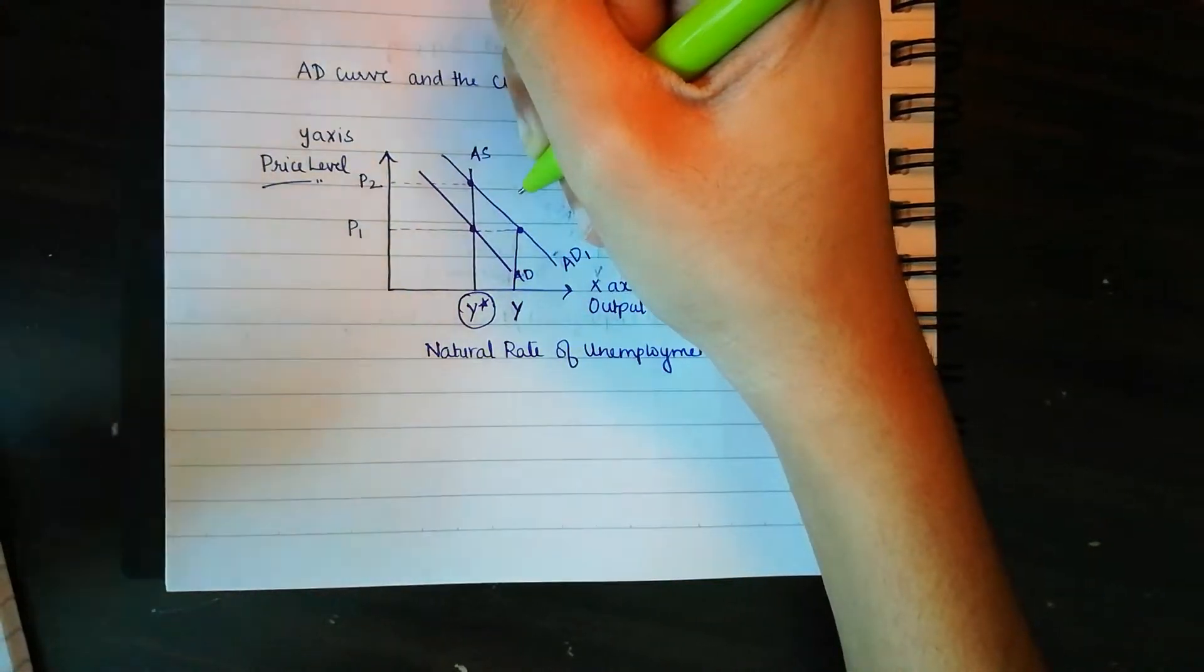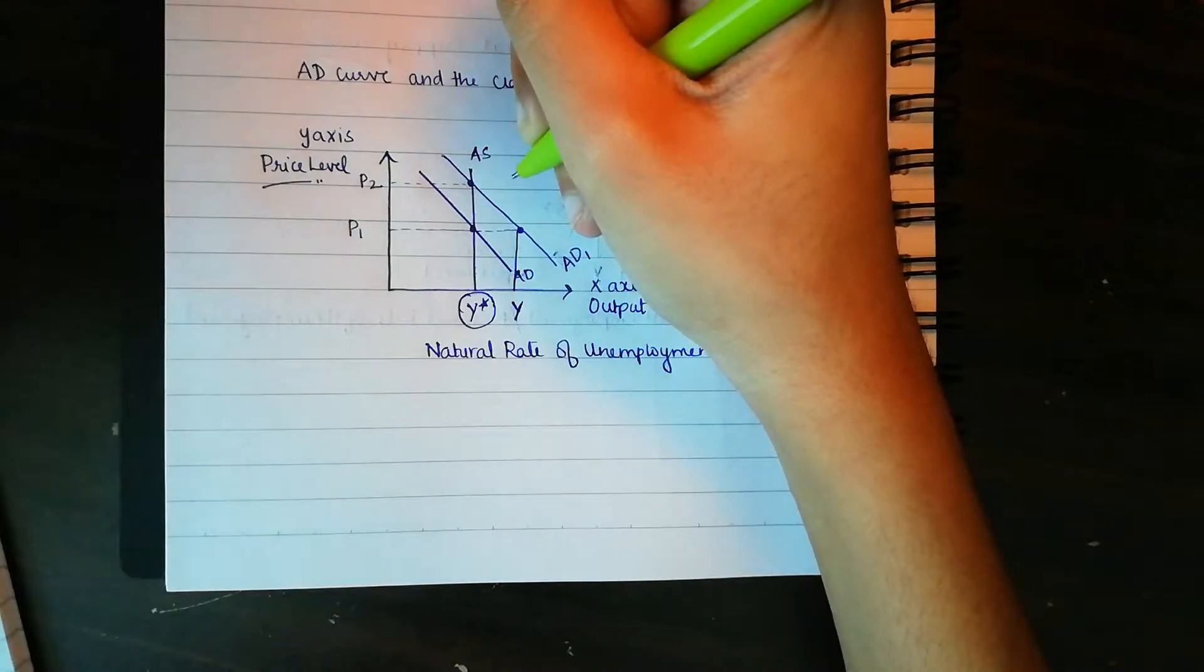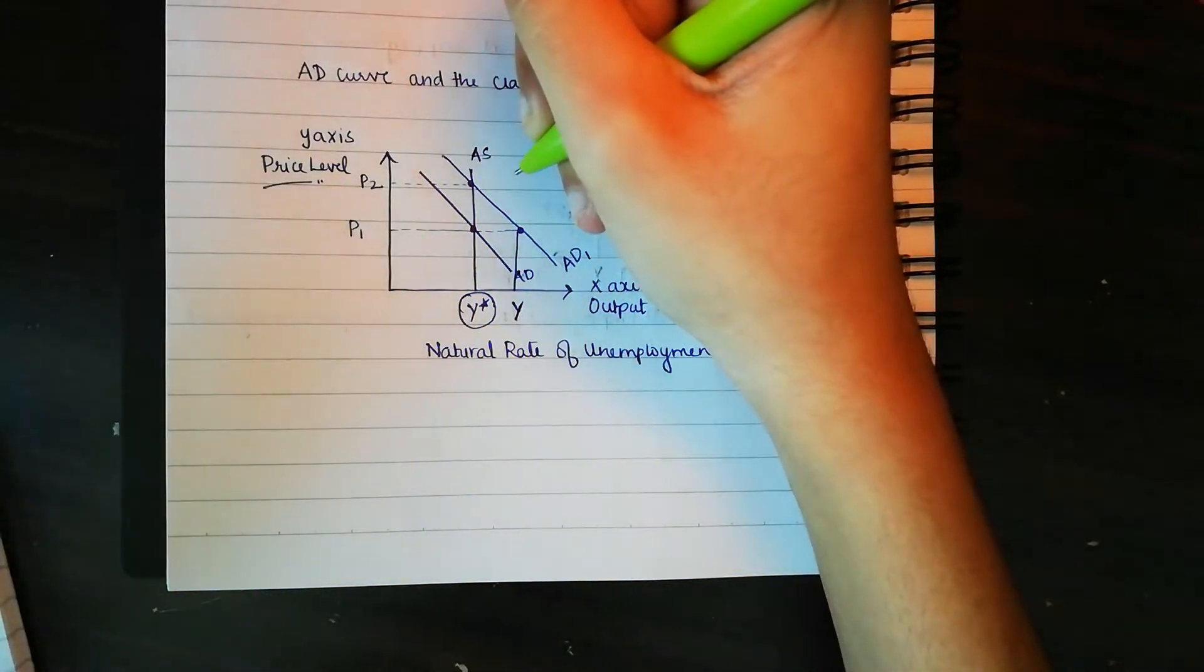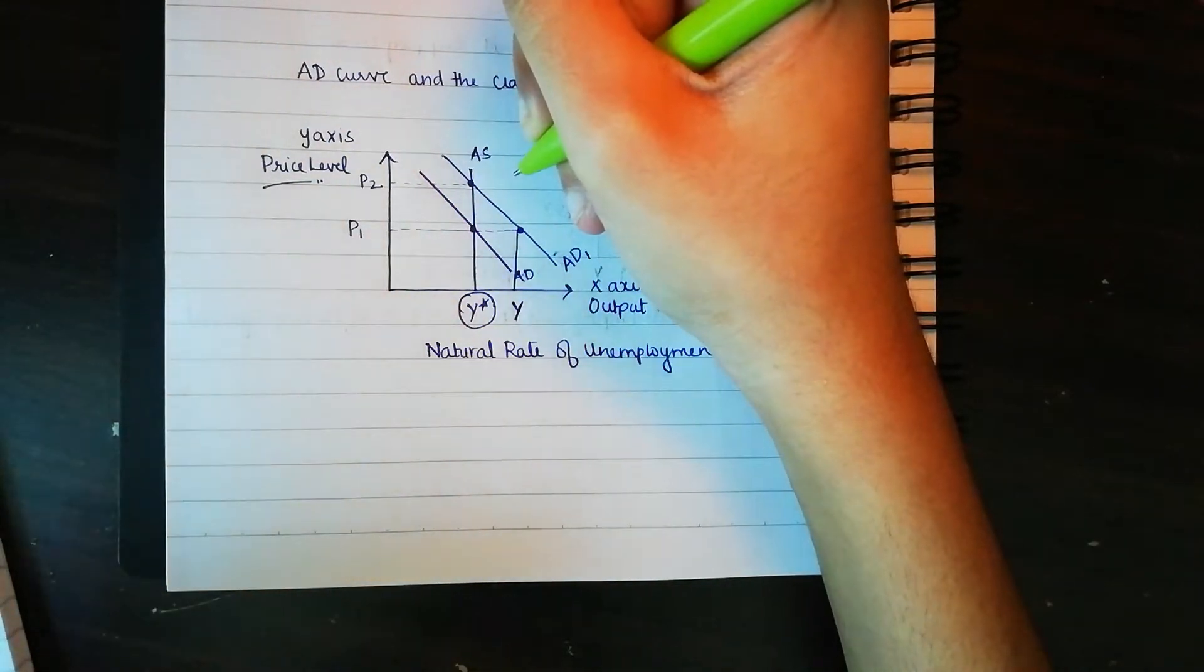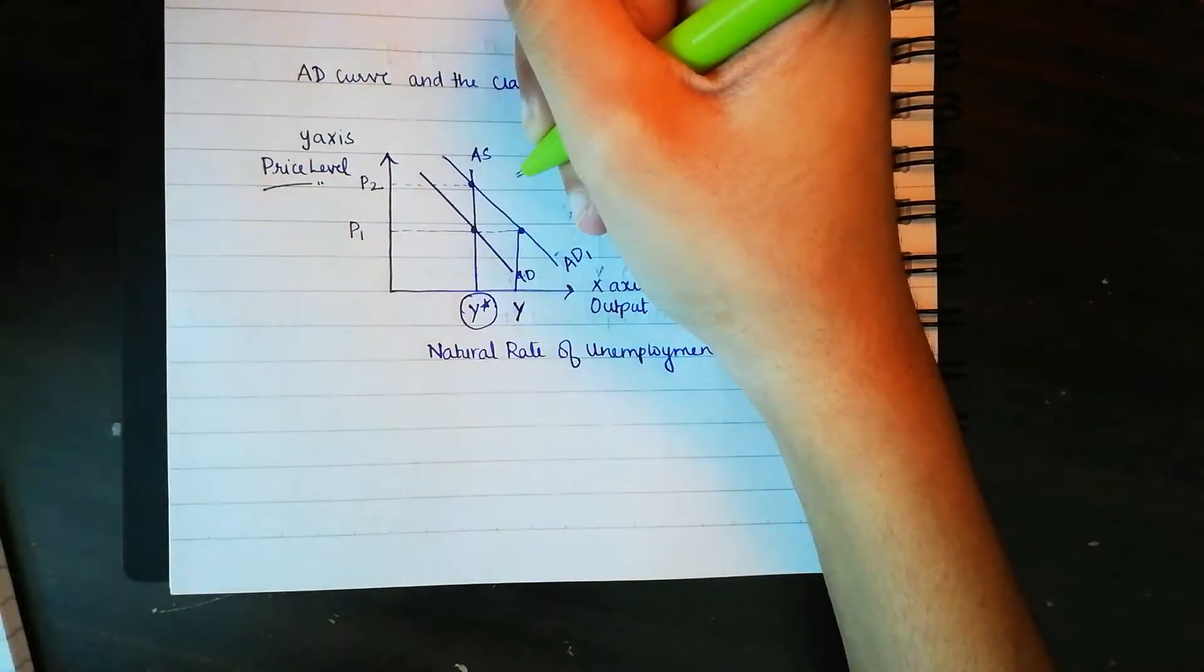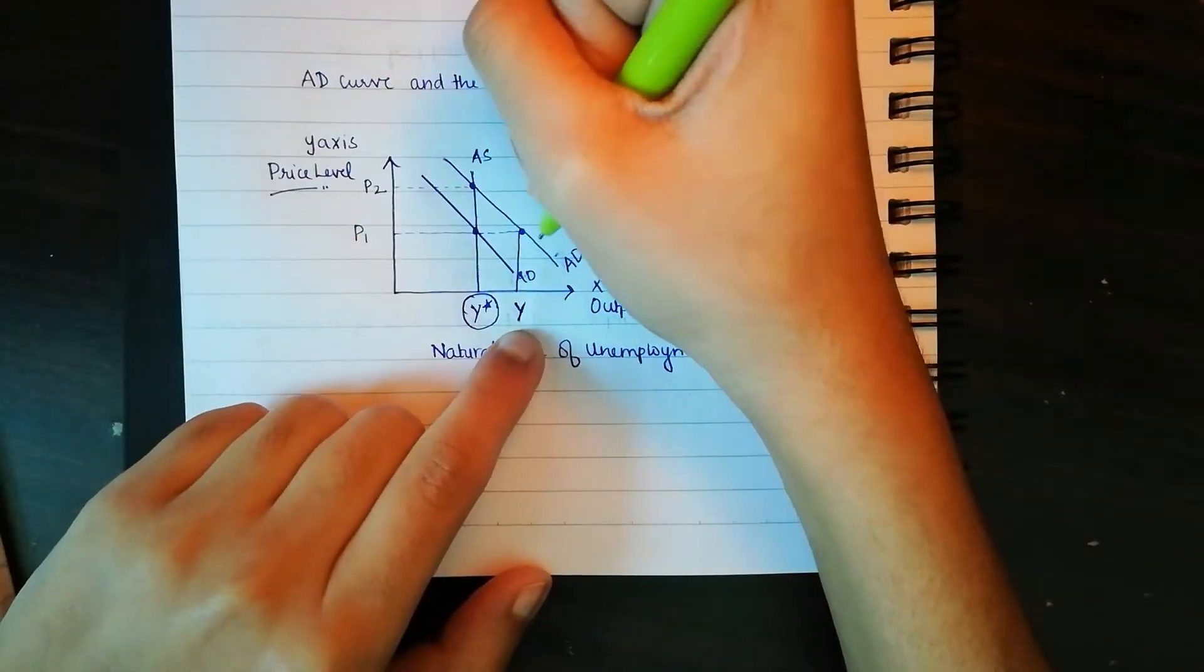They need to give higher salaries to workers who are already working in well-settled places. They need to make sure they have proper incentives for workers to get an output of Y.